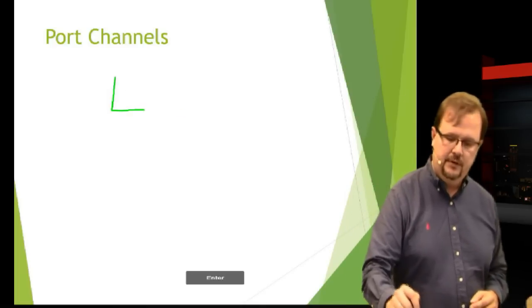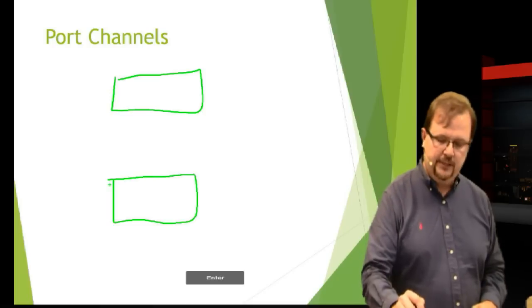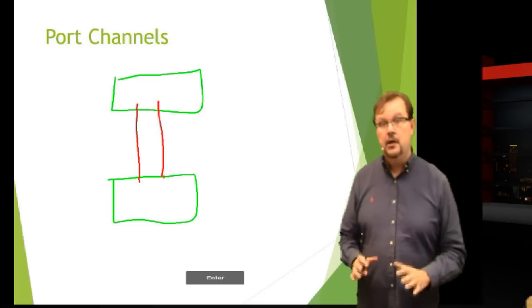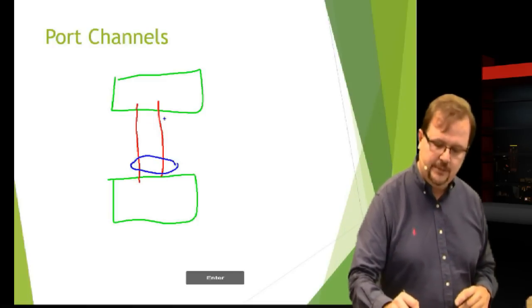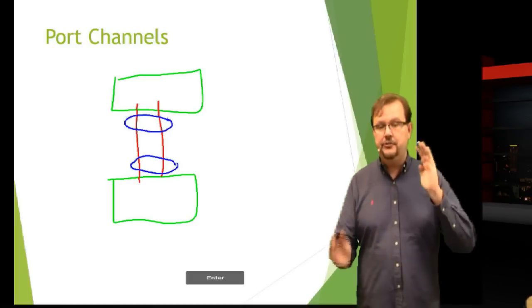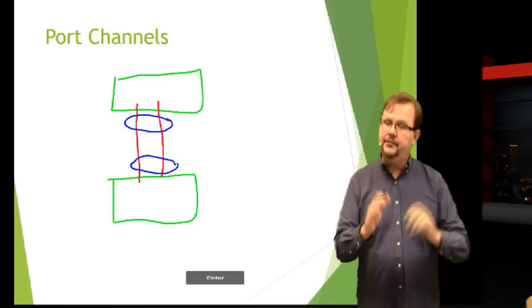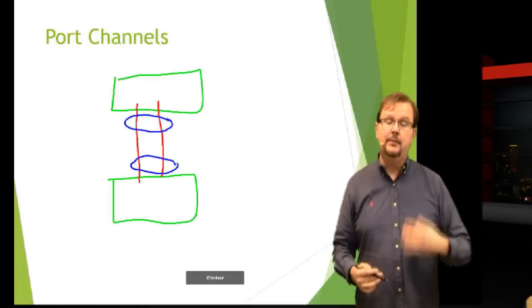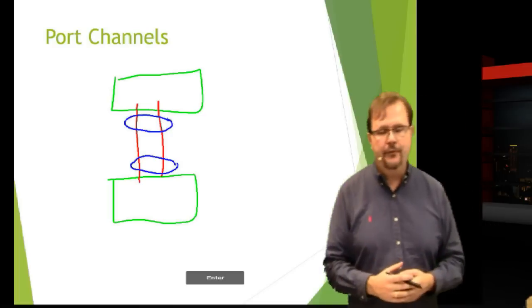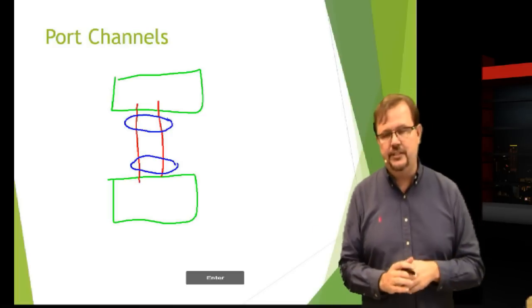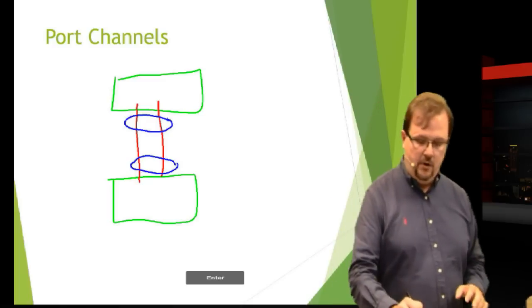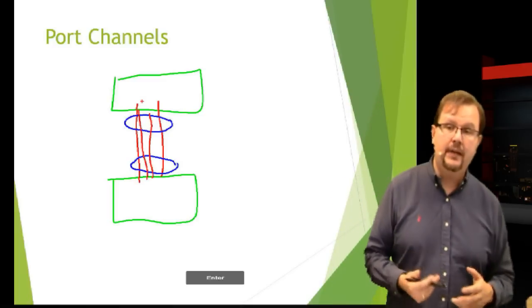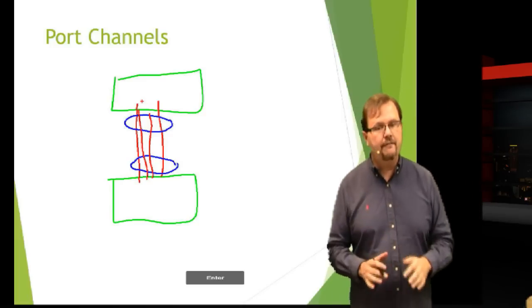The solution to this was something called Port Channel. Port Channels are defined between two switches. I can have one switch here, another switch here, put some links between them. What Port Channel did was pretty clever - it logically bonded these together, sometimes called bonding or ether channel. Port Channel allowed me to have an active-active scenario between two switches. I could send some traffic over one link, some traffic over the other link, so I'd get more bandwidth. I could do different types of load balancing - based on MAC address, IP address, or TCP port.